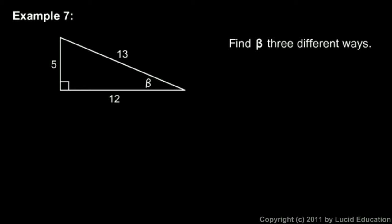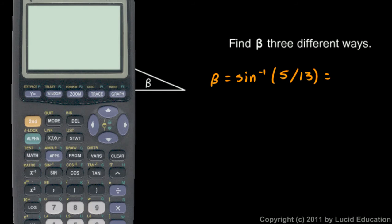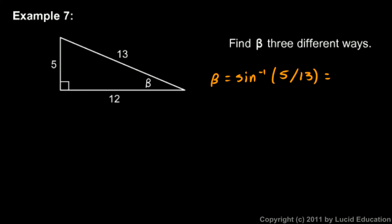We will find beta with the inverse sine function, with the inverse cosine function, and with the inverse tangent function, and we should get the same answer in each case. So let's do the inverse sine first. Sine is opposite over hypotenuse, so the sine of angle beta is 5 over 13. That means beta is the inverse sine of 5 over 13. Using the calculator, we get 22.62 degrees.